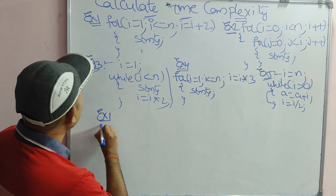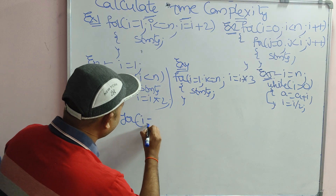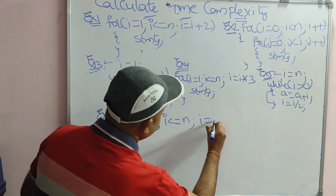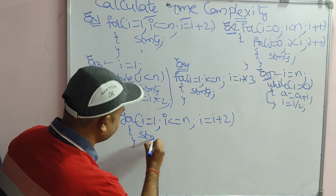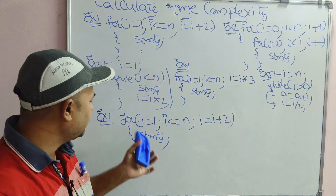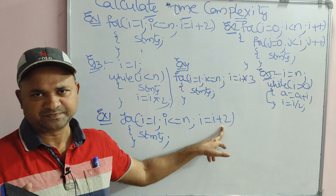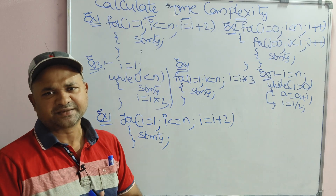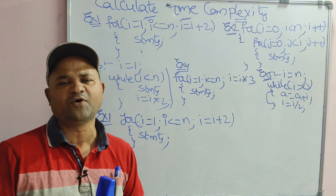Example 1: here we have a part of the program. For i is equal to 1, i less than or equal to n, i is equal to i plus 2, within the curly braces some statements. We need to calculate the time complexity for this for loop. If we have i plus plus, then directly we can say that time complexity is order of n, big O of n.